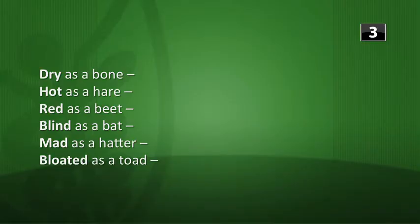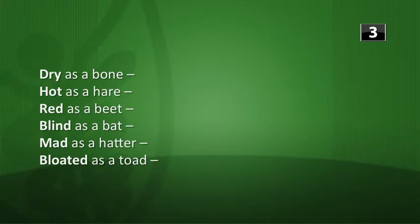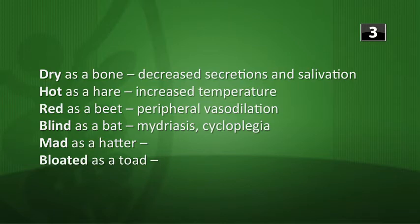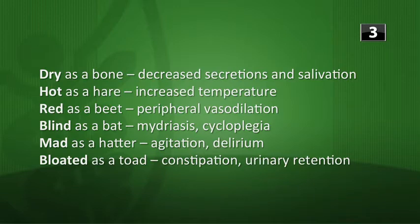What are the symptoms of inhibiting parasympathetic activity? You're going to be dry as a bone — decreased secretions and salivation. Hot as a hare — increased temperature. Red as a beet — peripheral vasodilation. Blind as a bat — mydriasis and cycloplegia. Mad as a hatter — agitation and delirium. And bloated as a toad — constipation and urinary retention.